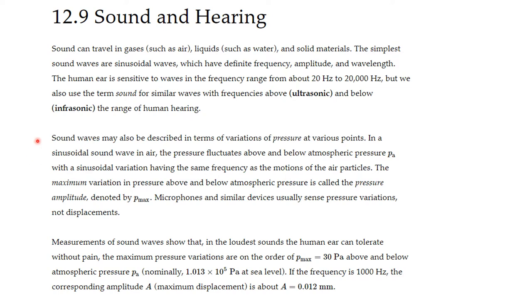Sound waves may also be described in terms of variations of pressure at various points. In sine sound waves and air, the pressure fluctuates above and below the atmospheric pressure with a sine variation having the same frequency as the motion of the air particles. The maximum variation in pressure above and below the atmospheric pressure is called the pressure amplitude, denoted by p max. Microphones and similar devices usually sense pressure variations, not displacements.